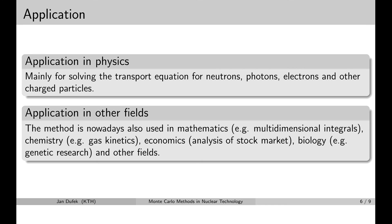In physics, the Monte Carlo method is primarily used for simulation of neutrons, photons, electrons, and possibly other particles. However, the method is widely used in mathematics — for instance for solving multi-dimensional integrals. The method is also used in chemistry, in biology, and in economics — for instance for simulation of the market.